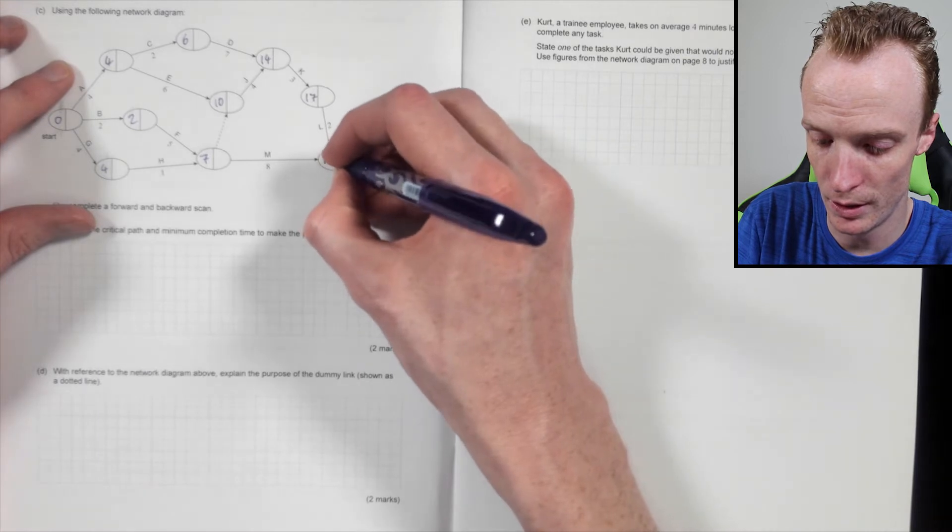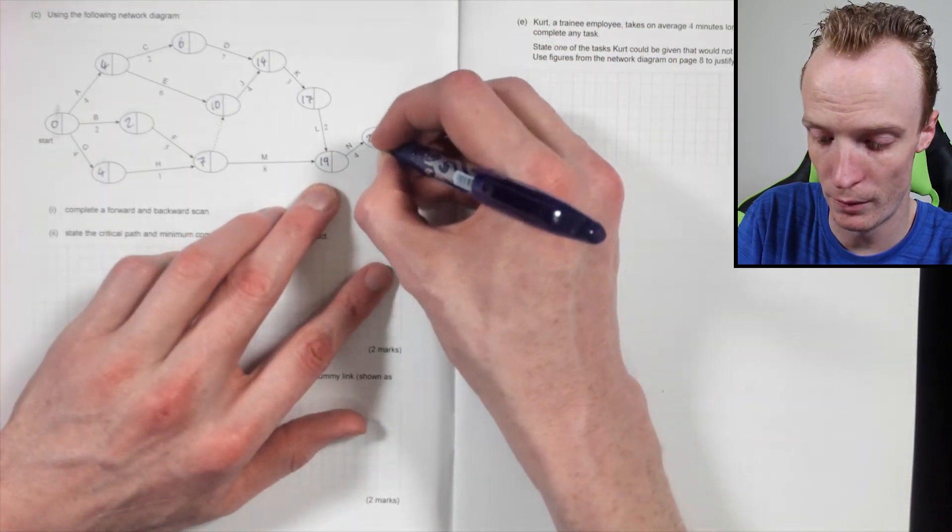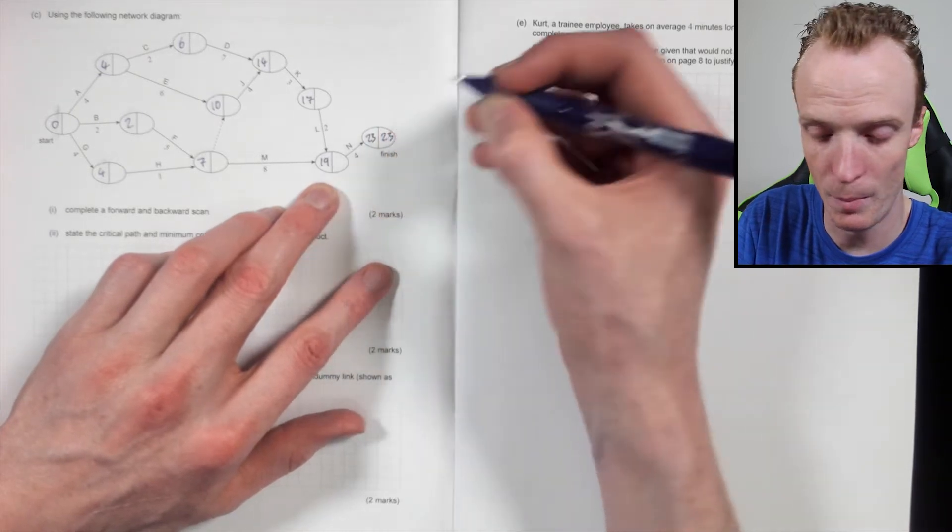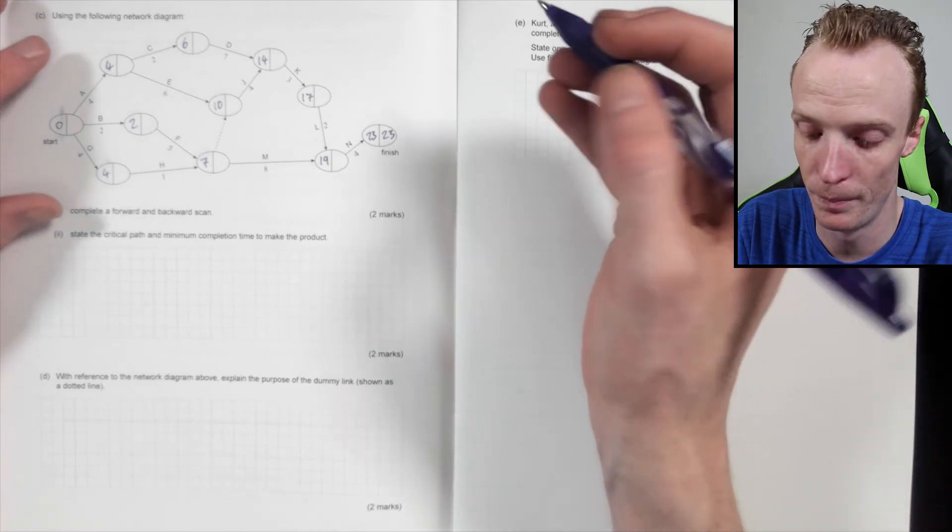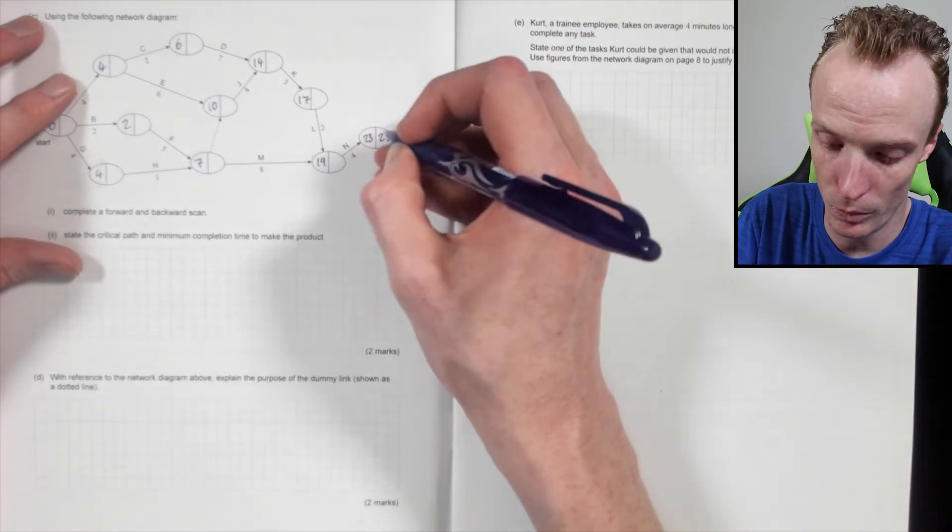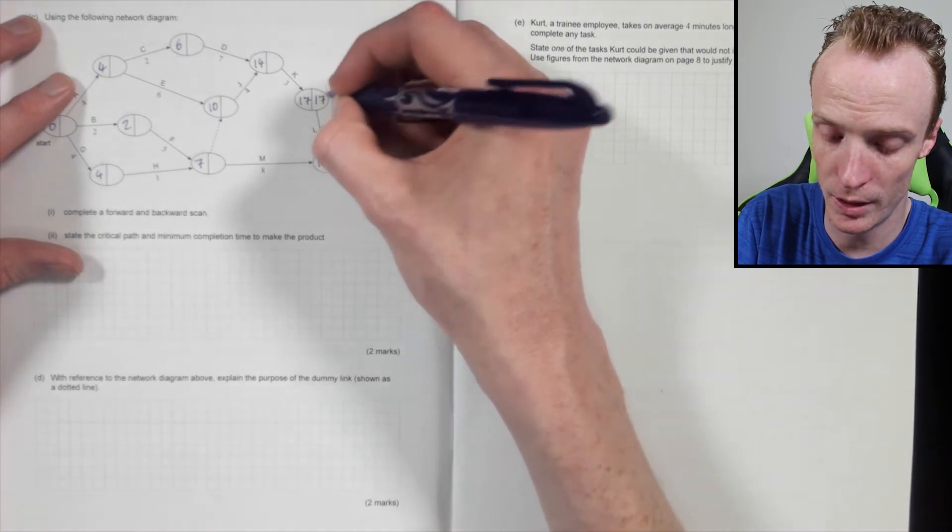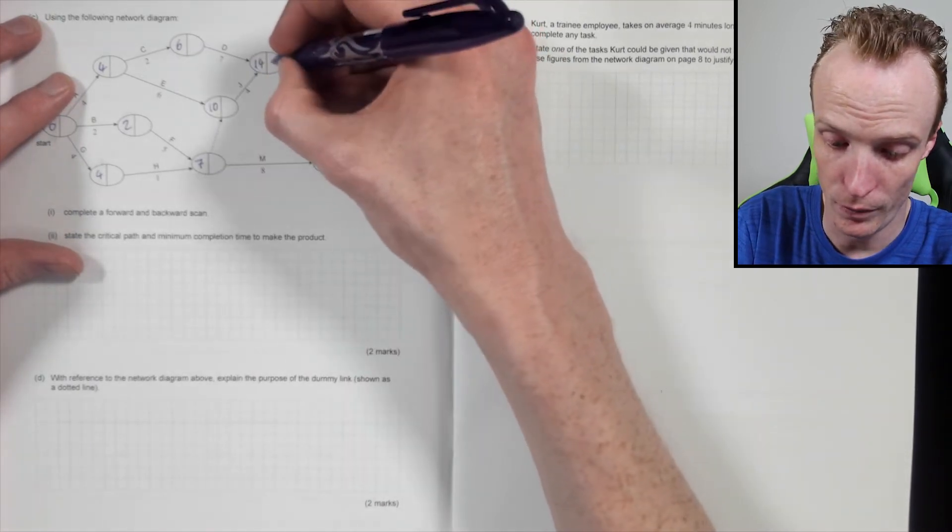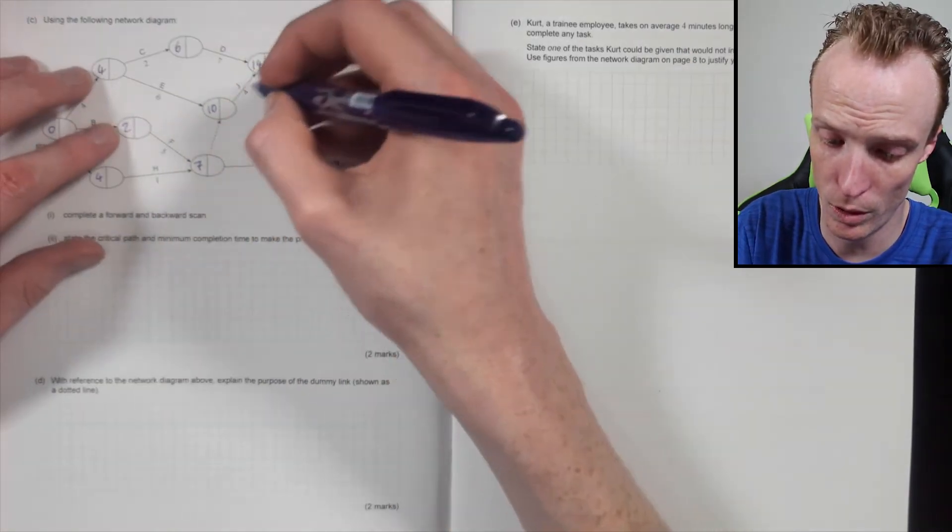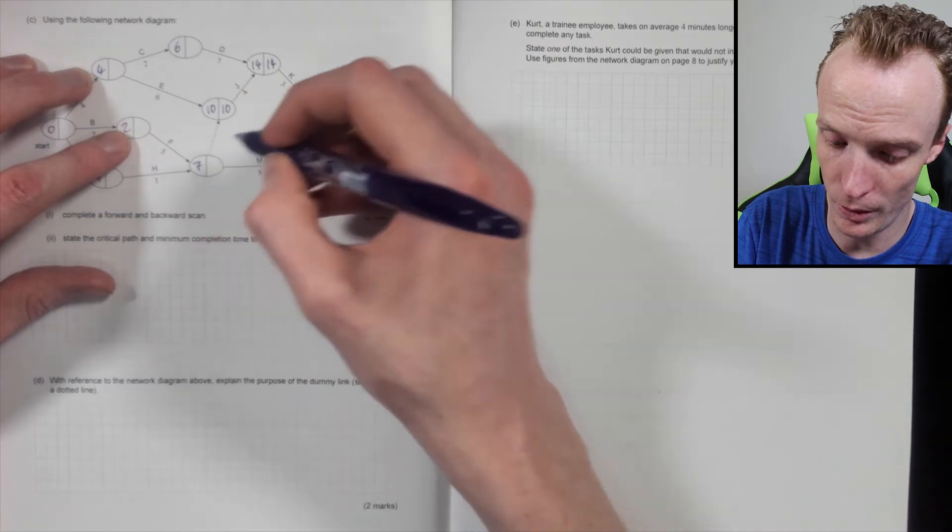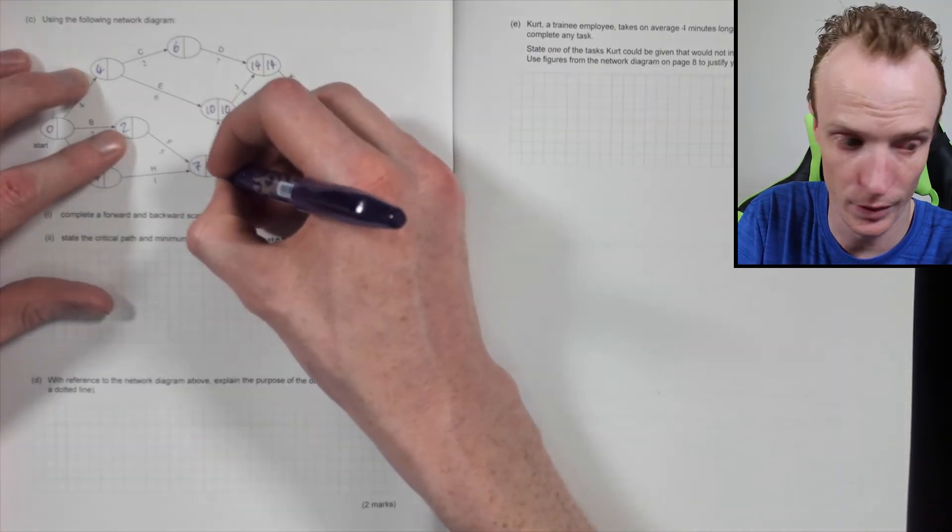6 + 7 is 13, 14, so that'll be 14. 14 + 3 is 17. 8 and 7 is 15. 17 + 2 is 19, and then 19 and 4 is 23. Now on the way back you've got to do the reverse, but you're taking the smallest number each time.